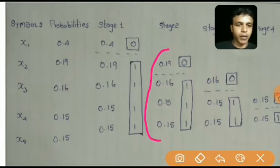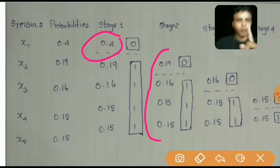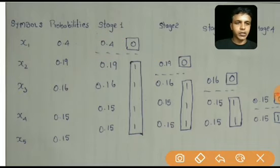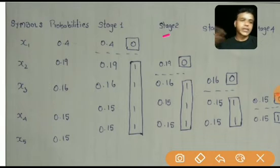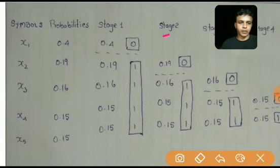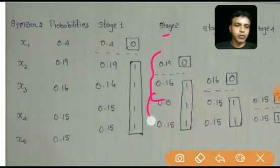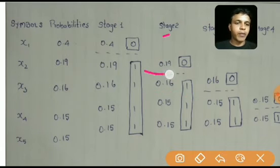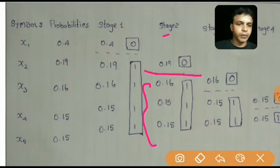In Stage 2, I again divide the probabilities into upper and lower parts. Since Stage 1 had only 0.4 in the upper part, that single probability cannot be divided further. The lower part probabilities are divided again. The same rule applies: the upper and lower sums should be as equal as possible; if not, the lower part sum should be greater. So in Stage 2, the upper part again has only 0.19.